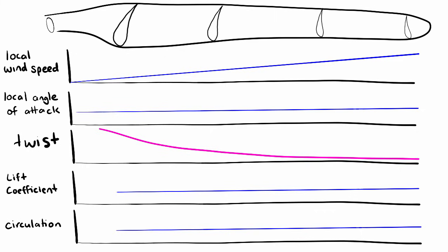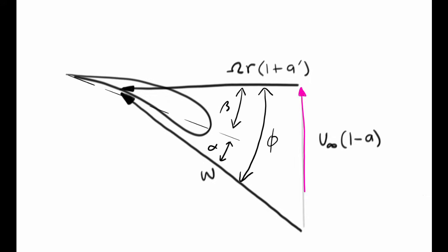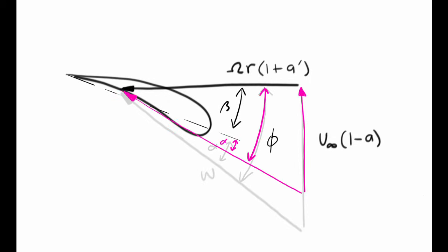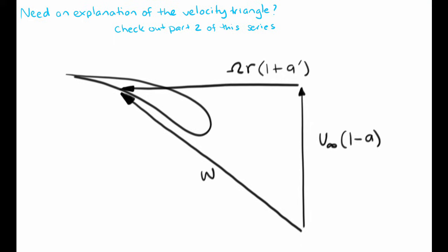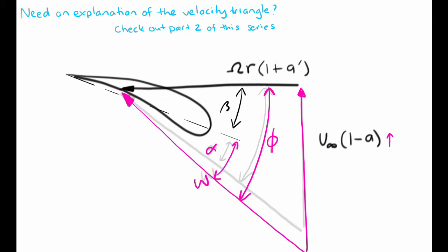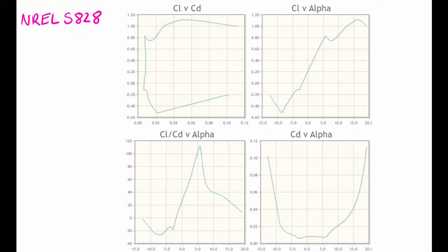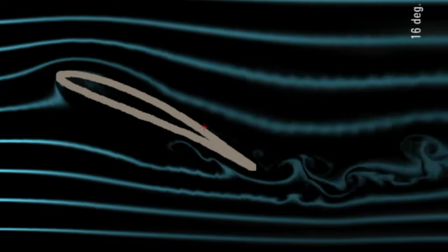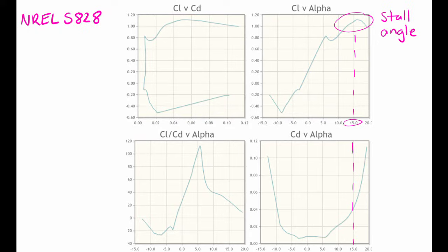If you design a blade with a chord and twist distribution changing like this, you will end up with a constant lift force along the blade length, but only at the specific wind speed the blade was designed for. If you change the wind speed but leave the rotational speed the same, then the chord and angle of the profiles are no longer optimal. If the wind speed is lower, the local angle of attack will be lower than optimal, giving worse performance. If the wind speed is higher, local angles of attack are larger than optimal, and if the angle of attack increases beyond the stall angle, the flow over the profile will separate and it will stall, causing a sudden drop in lift force and a sudden increase in drag.